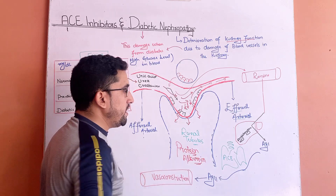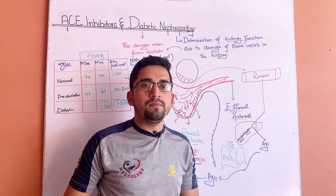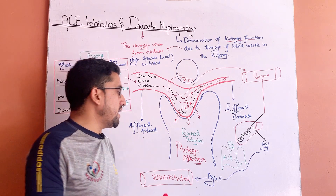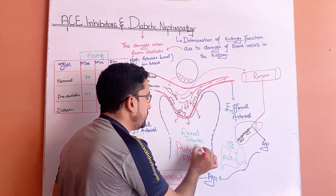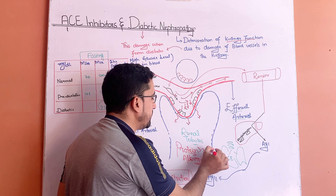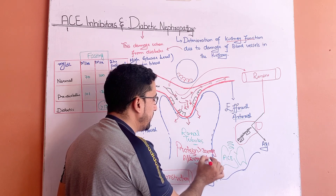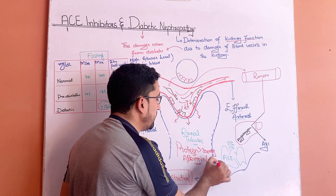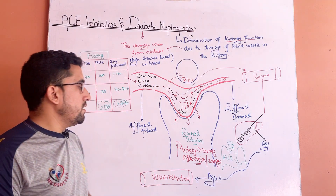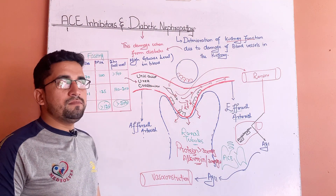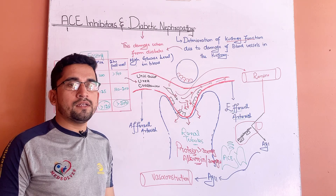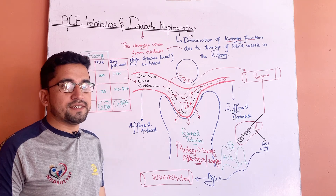So when, in a diabetic patient, the protein level becomes higher than 300 milligrams per 24 hours and the albumin level becomes higher than 300 milligrams per 24 hours, it means that diabetic nephropathy has occurred in this type of patient.